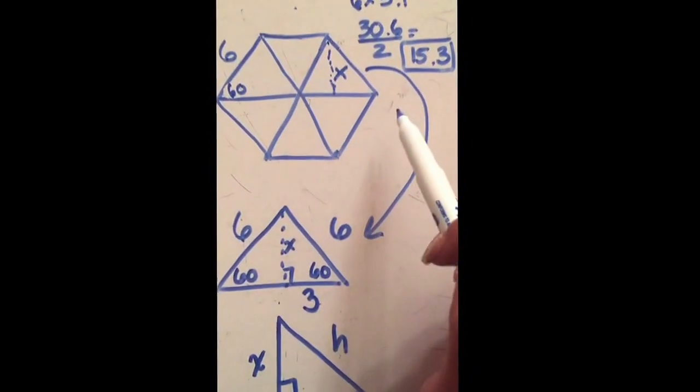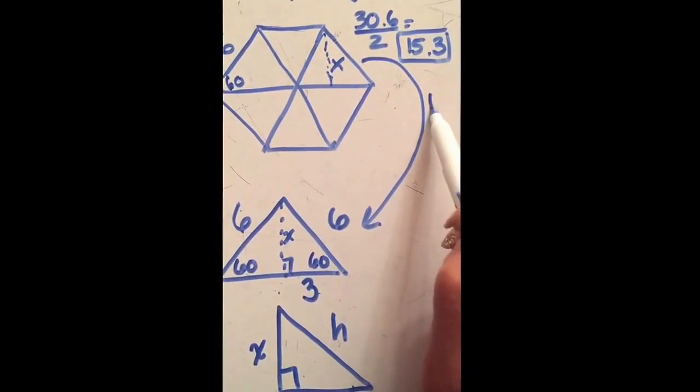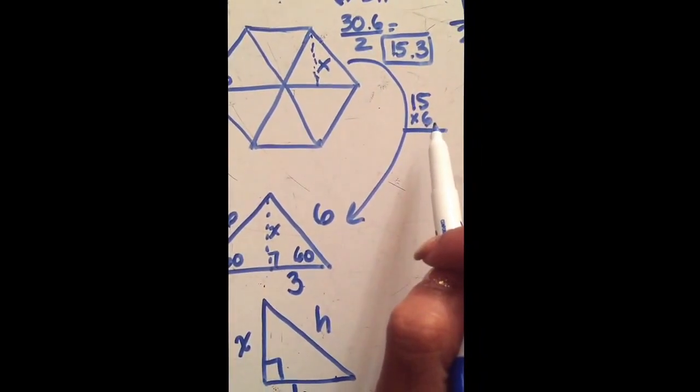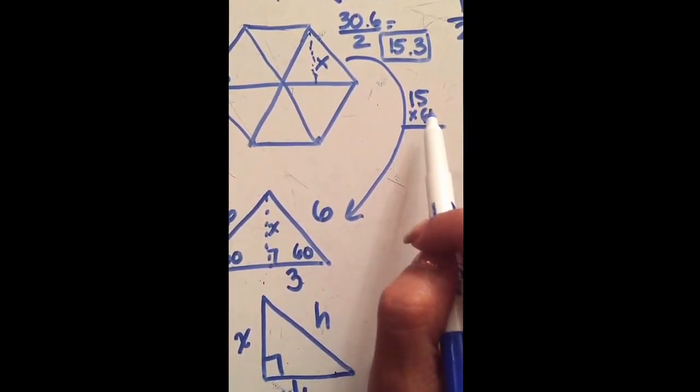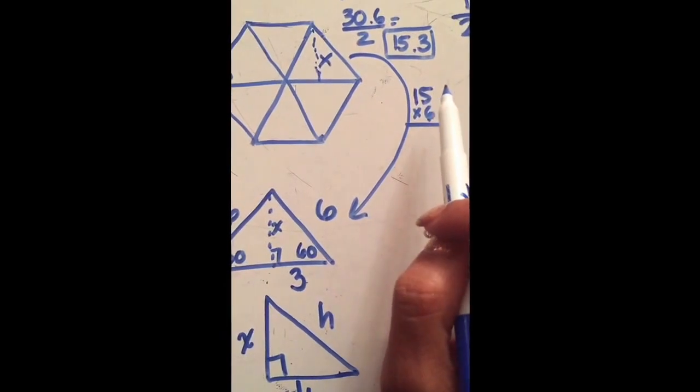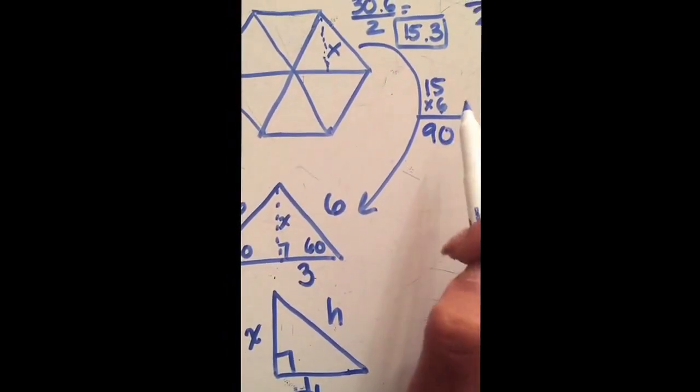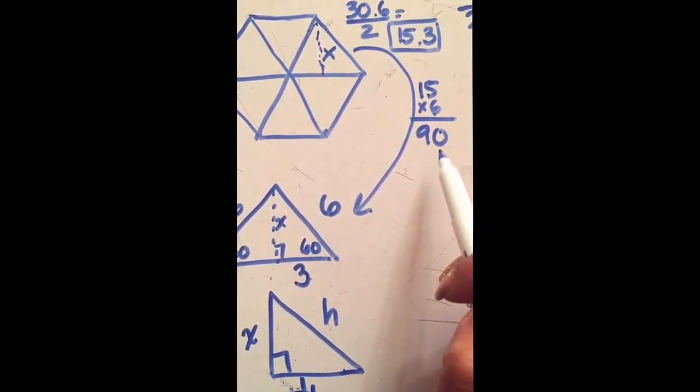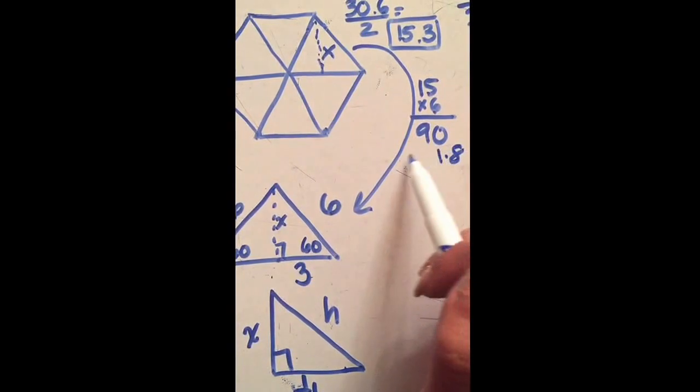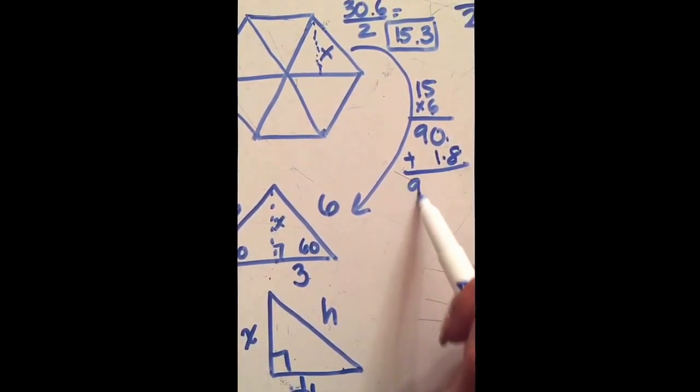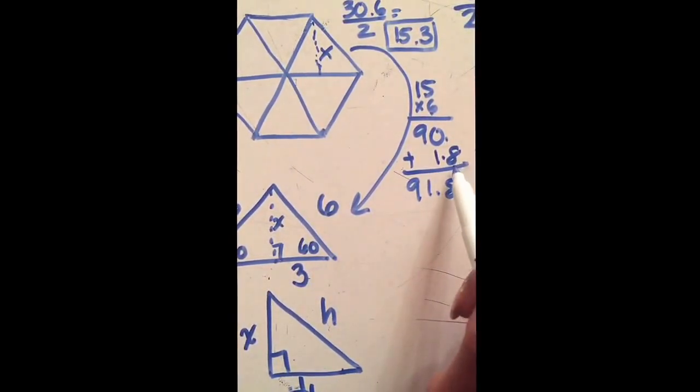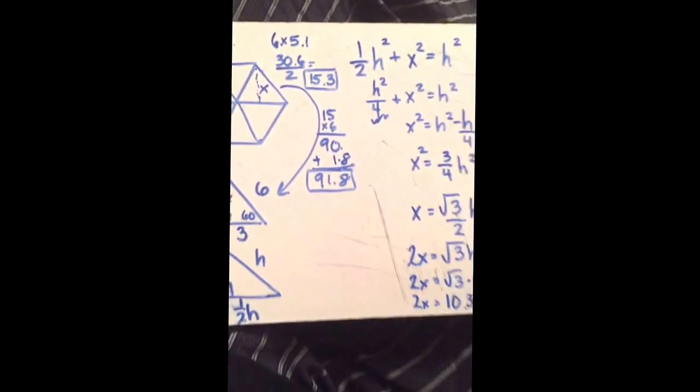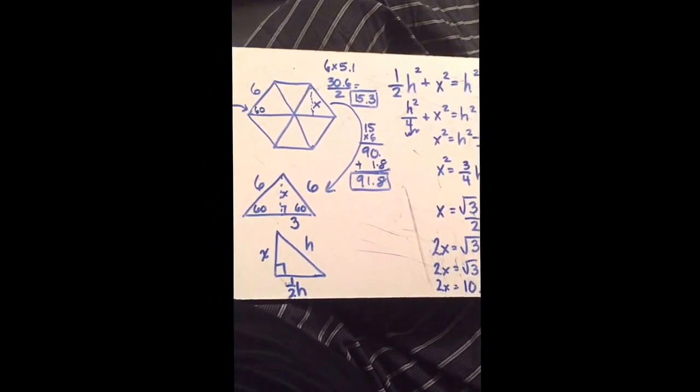I can take that and just multiply it by 6 because there are 6 all the way around. So 15 by 6—because I want to play with my numbers anyway—and I did my doubling so it's the same thing as 30 by 3 and I'll get 90, and then 3 tenths times 6 is 1.8. So I know my area for this part is 91.8 square units.